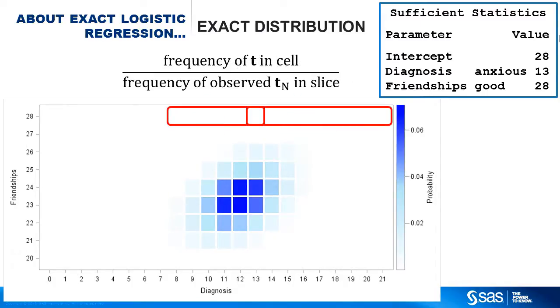Each cell contains the proportion of the sufficient statistic's count in the distribution. The cell for the observed sufficient statistic for diagnosis and friendships is circled, and this entire distribution is used for the joint test. To compute tests and parameter estimates for diagnosis, you also fix friendships at 28, so only this slice of the distribution is used. To compute tests and estimates for friendships, you fix the diagnosis sufficient statistic at 13. Overconditioning is a big problem for exact logistic regression, because you seem to be throwing out a lot of information.